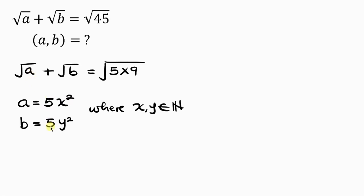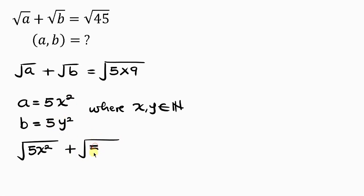Our next step is to substitute 5x² in place of a and 5y² in place of b. So this becomes the square root of 5x² plus the square root of 5y², and this is equal to the square root of 5 times 9.